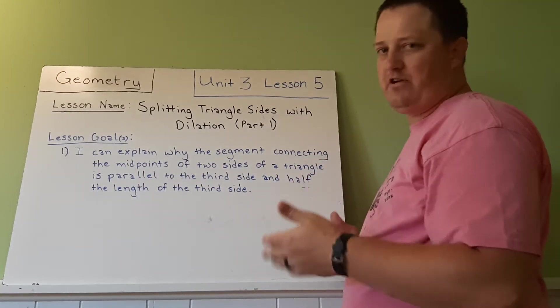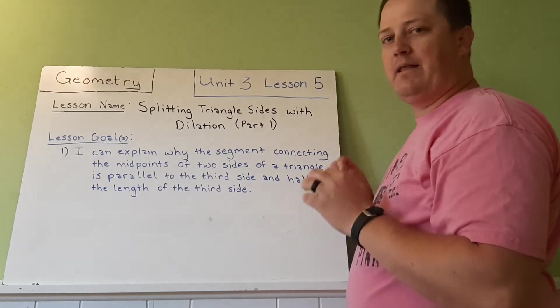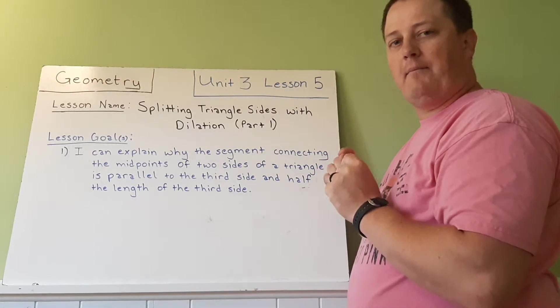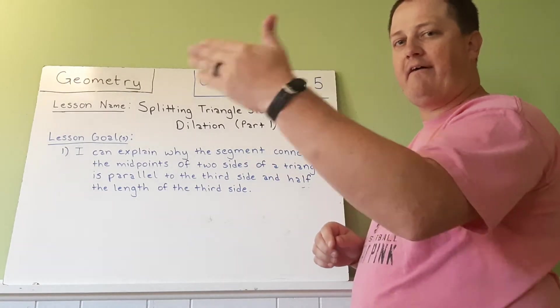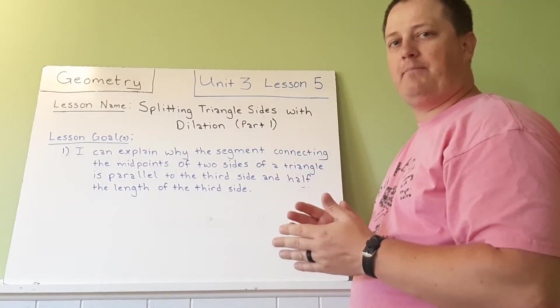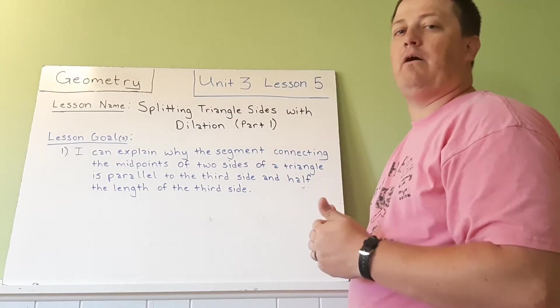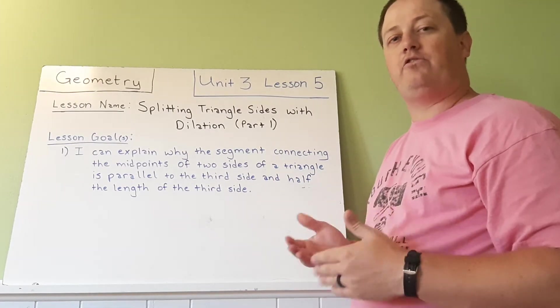So if you imagine a triangle and you find the midpoint, the halfway point of two sides, and you connect them, it'll be half that opposite side, the side not being used, and it'll be parallel with it. We want to look at why those two things happen.